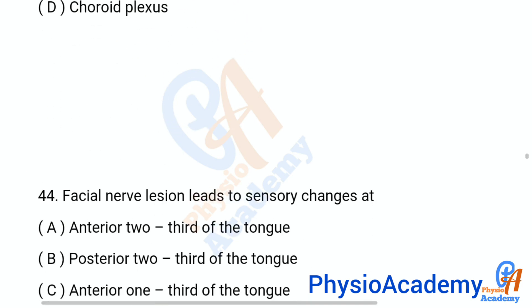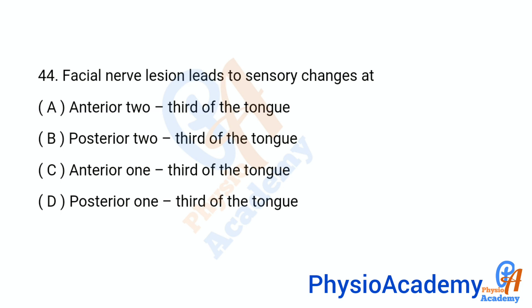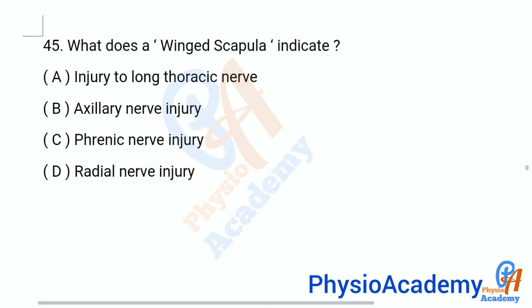Question number 44: Facial nerve lesion leads to sensory changes at — option A: anterior two-third of the tongue, option B: posterior two-third of the tongue, option C: anterior one-third of the tongue, option D: posterior one-third of the tongue. The correct answer is option A: anterior two-third of the tongue.